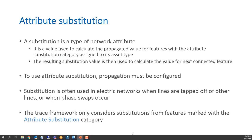Substitution is a type of network attribute — a value used to calculate the propagated value where an attribute substitution category has been assigned to its asset type. The substitution value calculates the value for the next connected feature downstream. To use substitution, propagation must be properly configured. A motivating example is electric networks where lines are tapped off other lines or phase swaps occur. The trace framework only considers substitutions on features with the attribute substitution category specified.